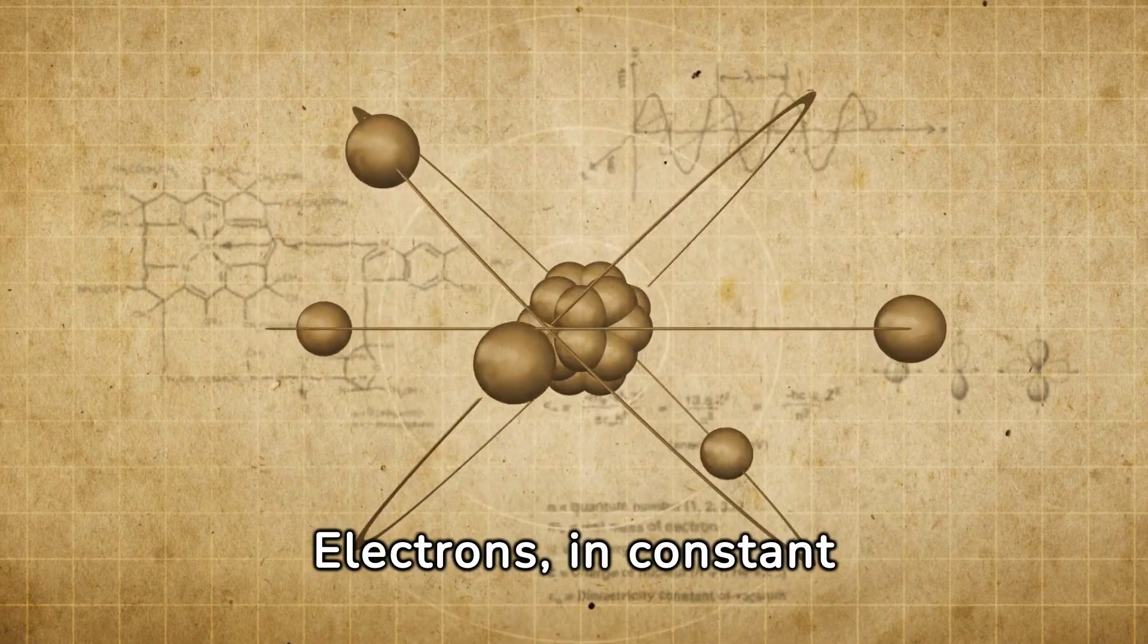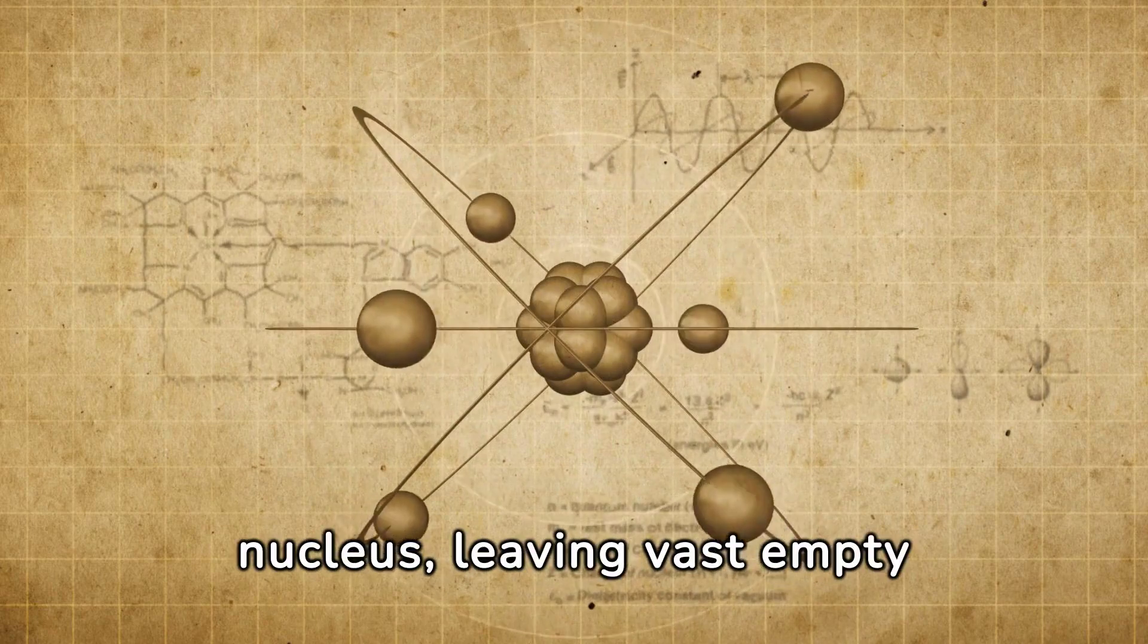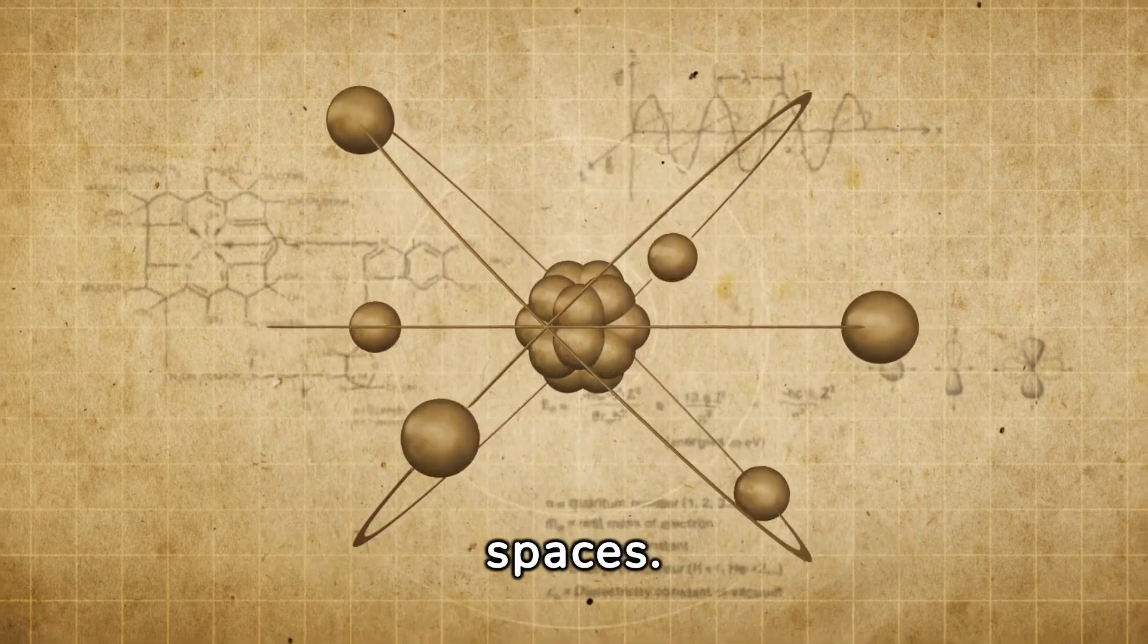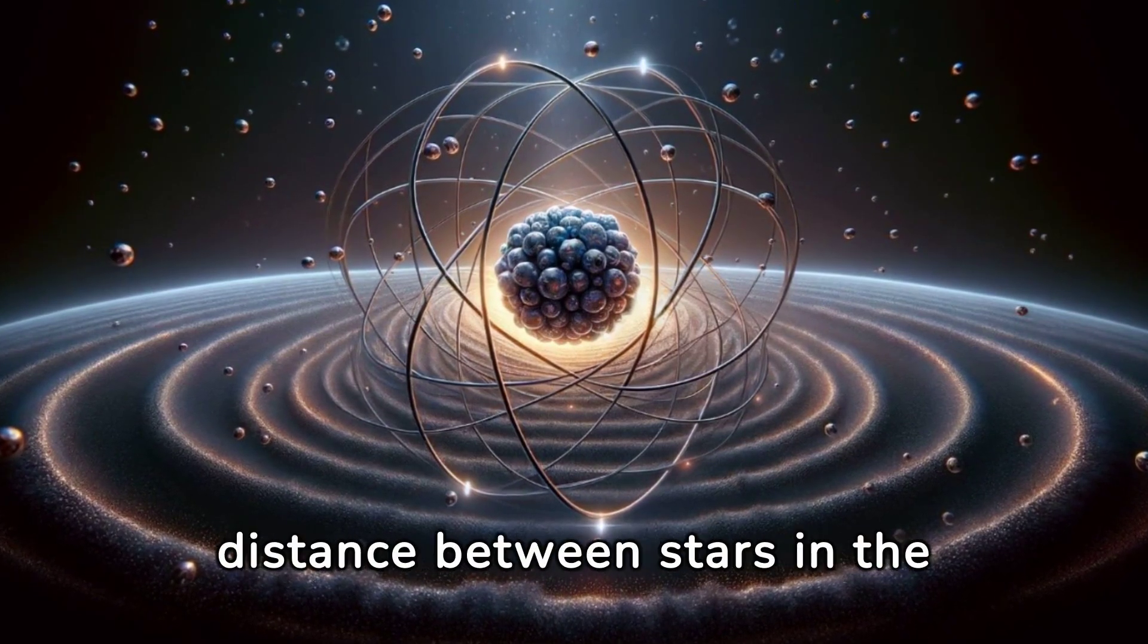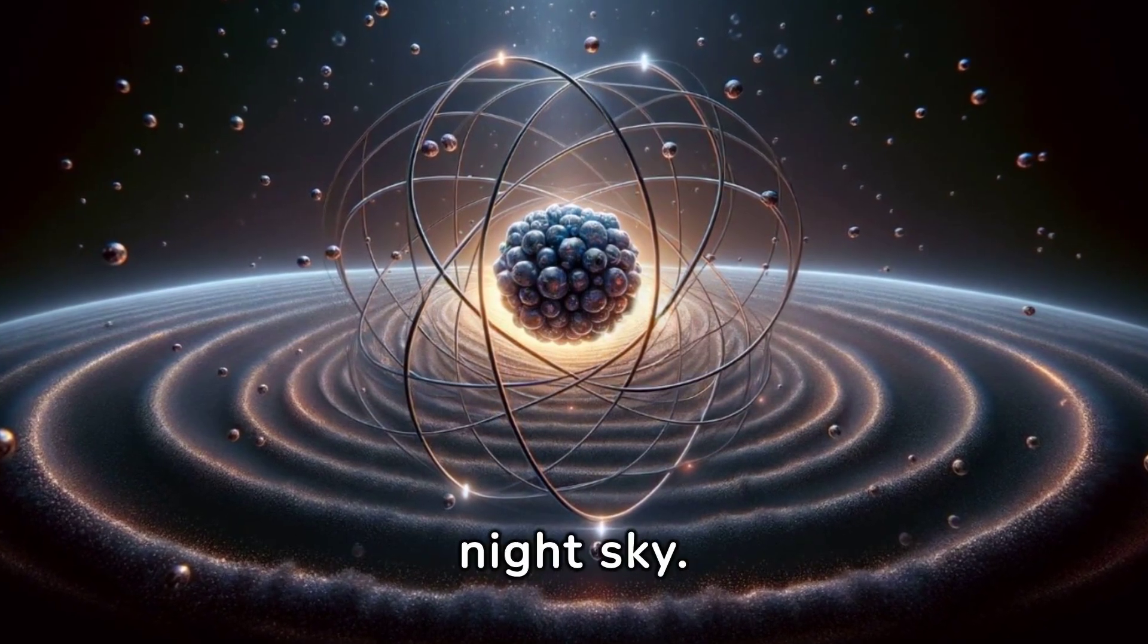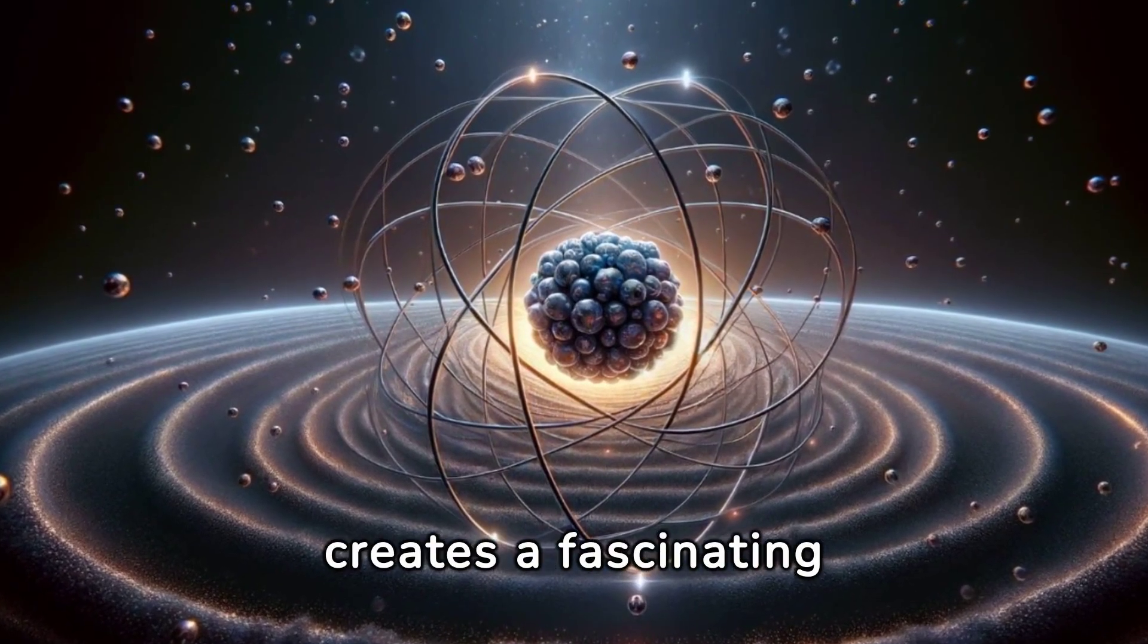Electrons in constant motion orbit around this nucleus, leaving vast empty spaces. The distance between the nucleus and the electrons is proportionally similar to the distance between stars in the night sky. This disproportion creates a fascinating paradox.